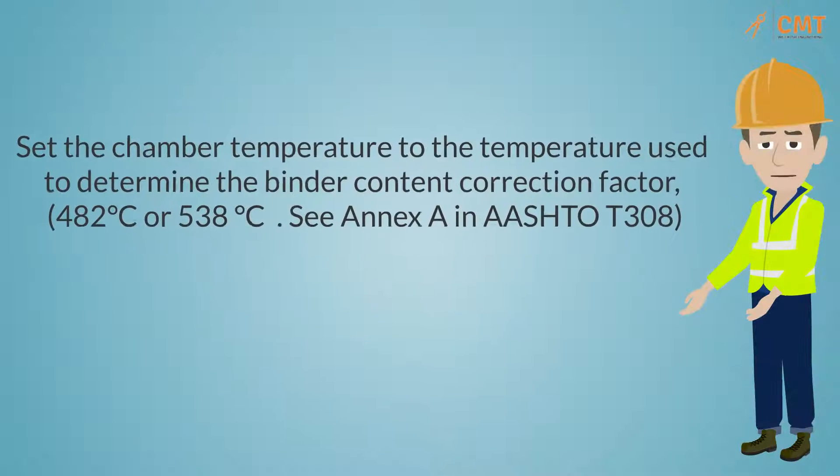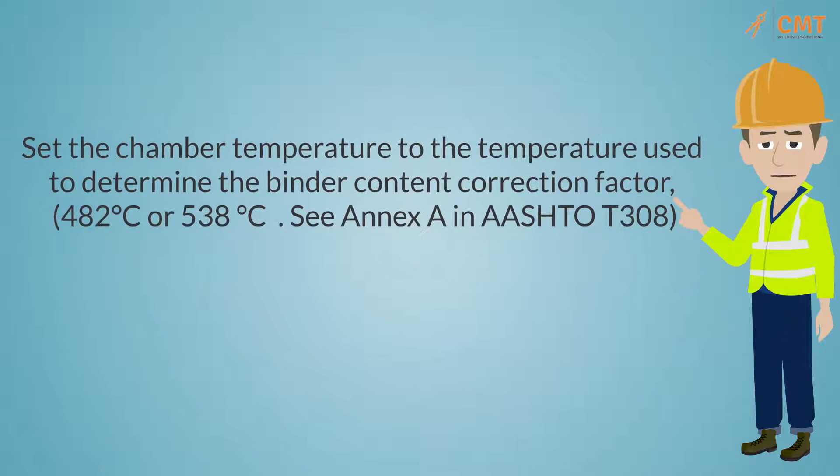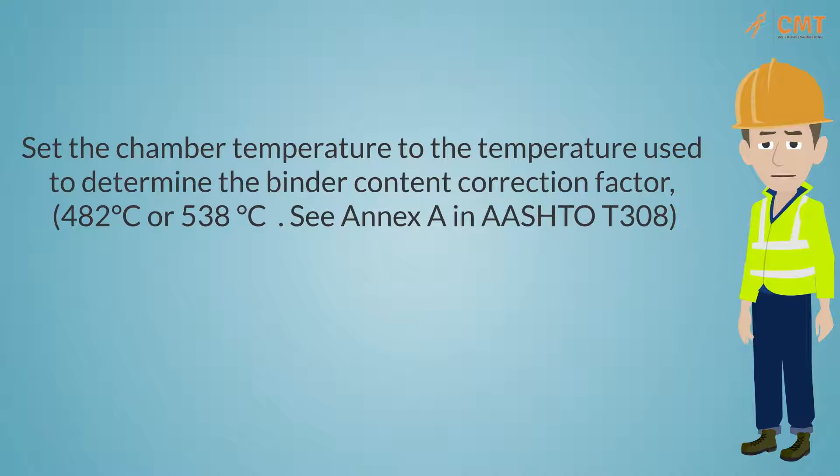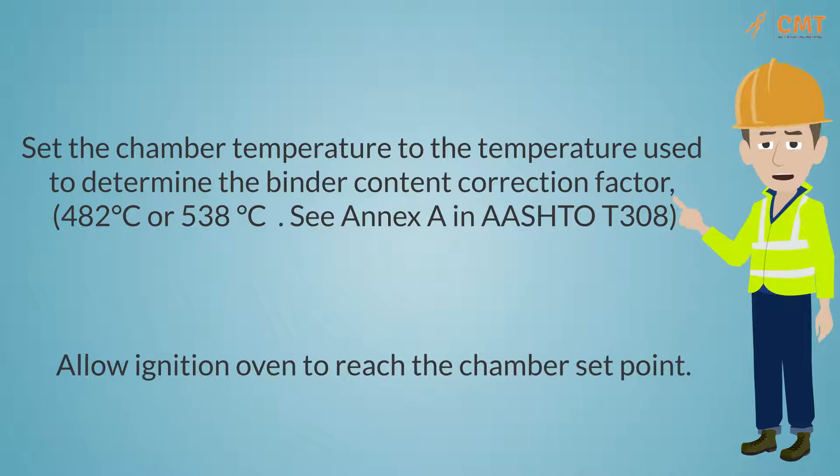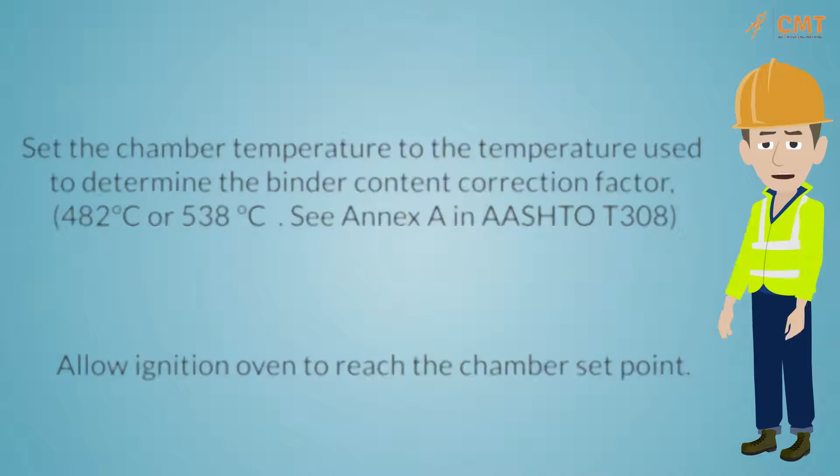To start this test, turn on the ignition oven and set the chamber temperature to the temperature used to determine the binder content correction factor, either 482°C or 538°C. See Annex A in AASHTO-T308. Allow approximately 3 hours for the ignition oven to reach the chamber set point.